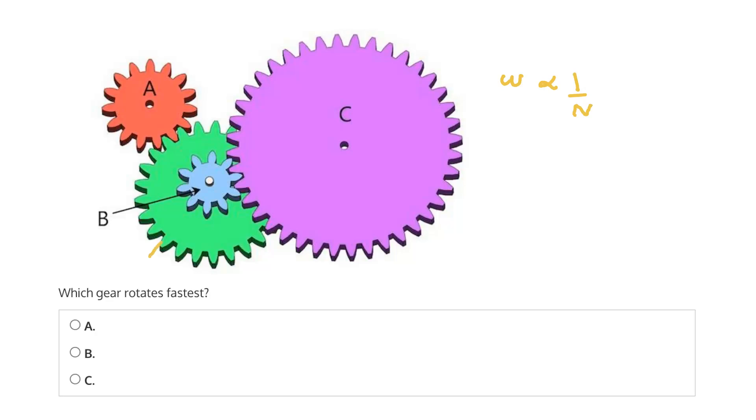So before we continue, let's mark this green gear here as gear D, and note that gear D and gear A are directly meshed. So we can start by comparing these two gears. Because the number of teeth in A is less than that in D, we know that the rotational speed of A will be greater than the rotational speed in D.